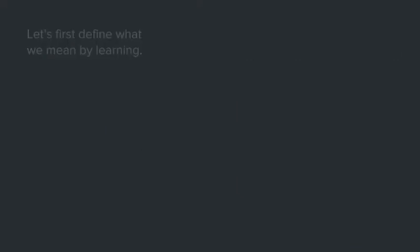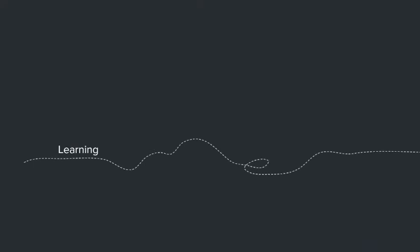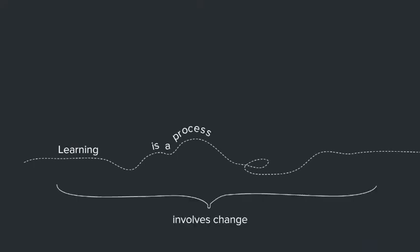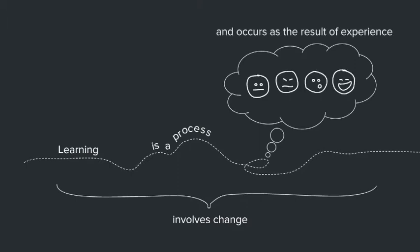Let's consider what we mean by learning. Learning is a process; it is not a product. Learning involves change, and this change happens over time. Learning is a result of how someone interprets and responds to experiences. Learning is not something done to students — they need to be active participants in their learning process, and we need to enable them to be.